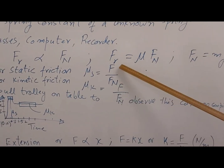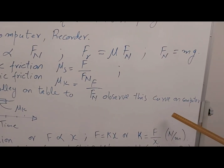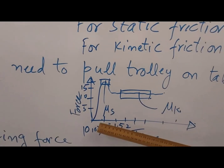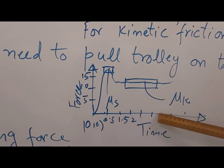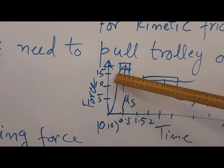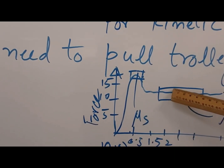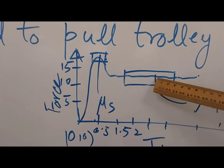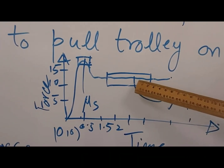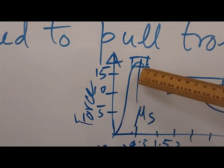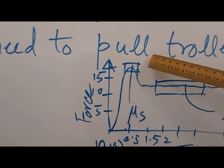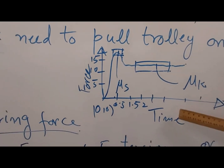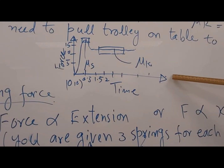You will observe these forces by looking at the curve on the computer screen. When you pull the trolley smoothly, the computer plots force on the y-axis and time on the x-axis. As soon as you pull the trolley, you will see an initial peak, and then the curve flattens out. Select the flat portion and highlight it — the computer will give you a number, and that number will be mu_k. The peak represents the coefficient of static friction, mu_s. Highlight that peak portion and record the number.